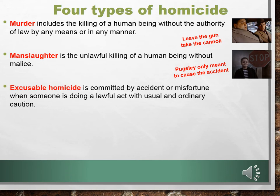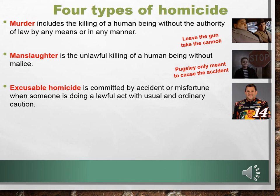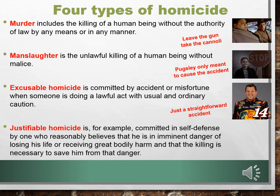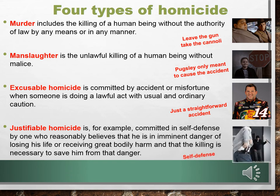Excusable homicide is committed by accident or misfortune when someone is doing a lawful act with usual and ordinary caution. For example, Tony Stewart, a race car driver at an event, does everything he's supposed to do, and unfortunately kills another driver who got out of his car to challenge him — that's a straightforward accident. Justifiable homicide is committed in self-defense by one who reasonably believes that he is in imminent danger of losing his life or receiving great bodily harm and that the killing is necessary to save him from that danger — we covered self-defense in Unit 1.